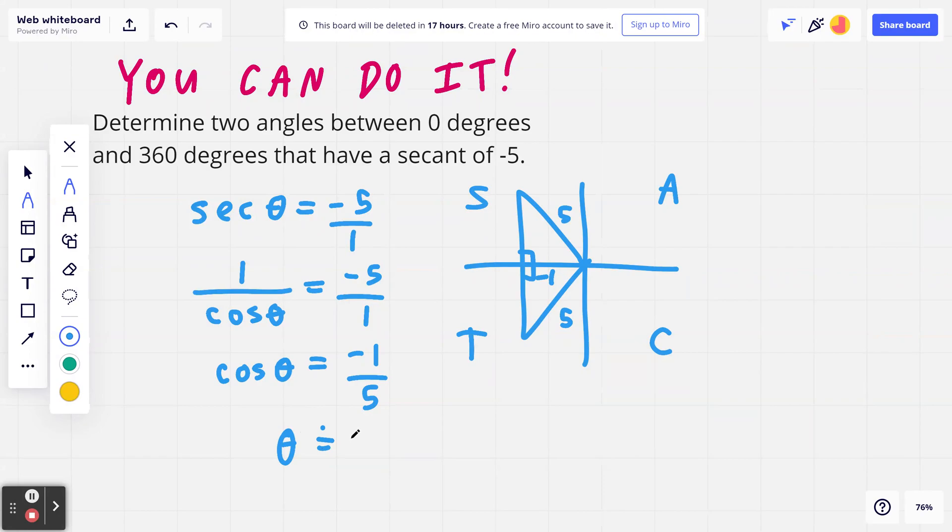angle theta is going to be approximately 101.536959. If you round to the nearest degree, it's approximately 102 degrees.